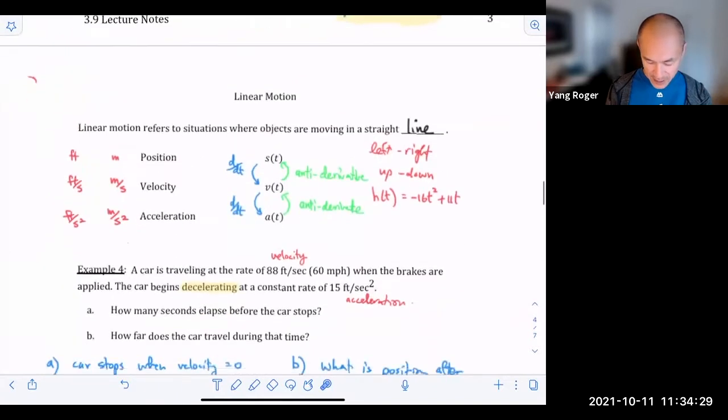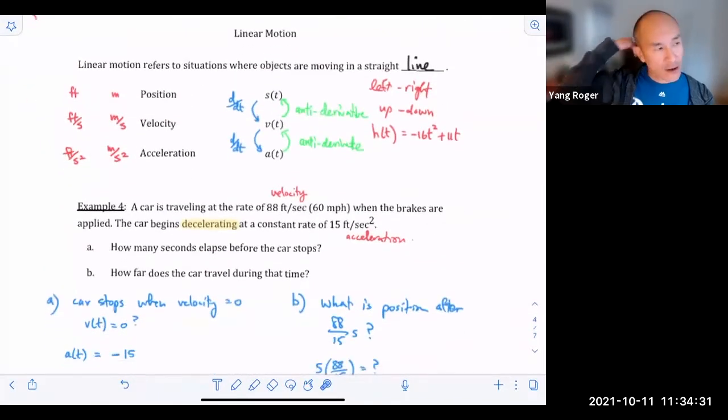The final thing in this section is our old friend, linear motion. Remember, this is the movement of a particle along a straight line. The line sometimes goes left to right or up and down like this, but it's just a point moving along the line.